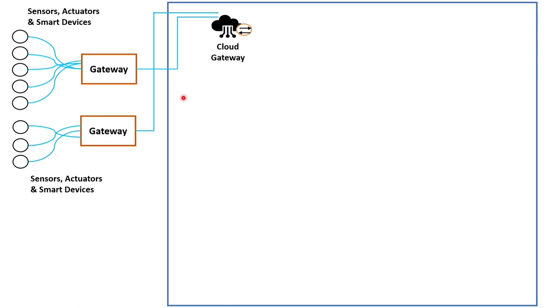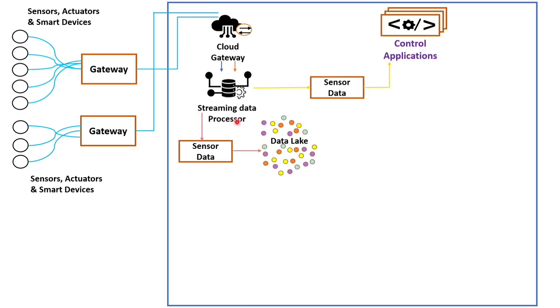The next part is streaming data processor. It ensures effective transition of input data forwarded by the cloud gateway to a data lake and control applications. It also ensures that no data can be occasionally lost or corrupted.